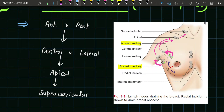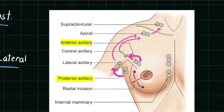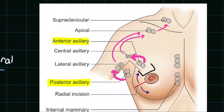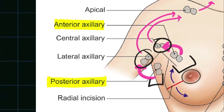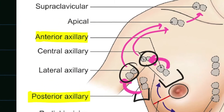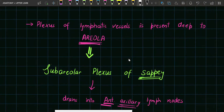Now let's talk about the flow of lymph in the axillary group. The anterior and posterior groups transfer the lymph to the central and lateral nodes, and from there into the apical nodes, and finally into the supraclavicular nodes. In the diagram: anterior group and posterior group transfer their content to central and lateral, from there the content goes to the apical, and from the apical into the supraclavicular nodes. Below the areola, there is a plexus of lymphatic vessels called the subareolar plexus of Sappey.